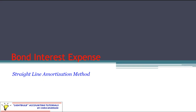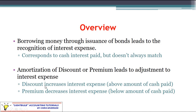In this module we will discuss the topic of bond interest expense under the straight-line amortization method. As an overview, we are talking about a company that issues bonds to borrow money.